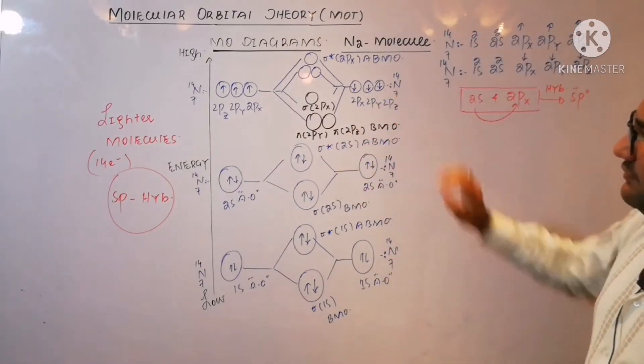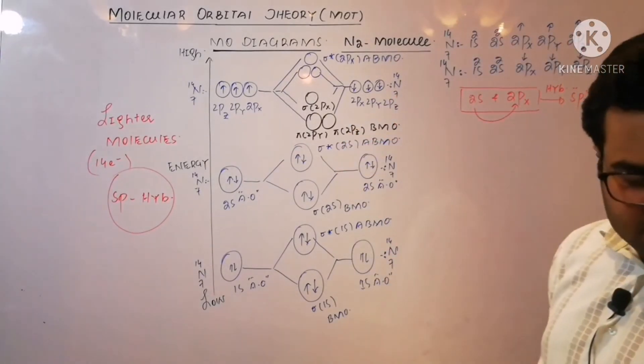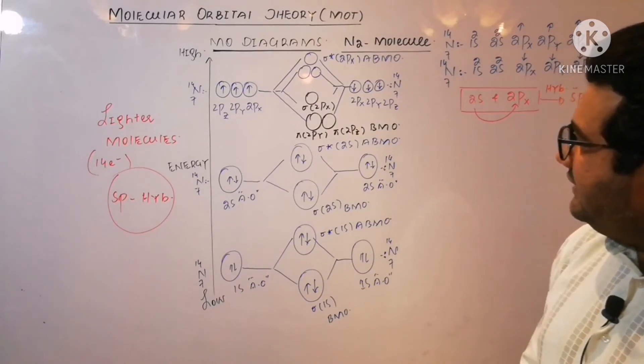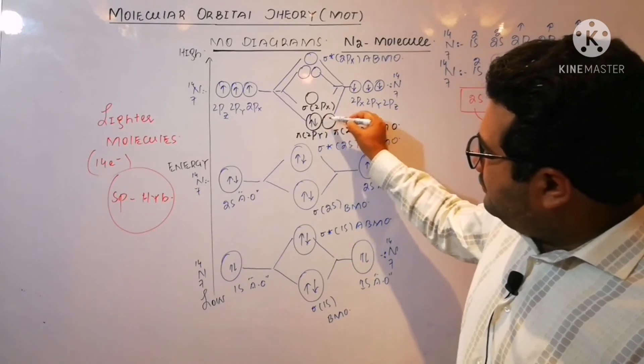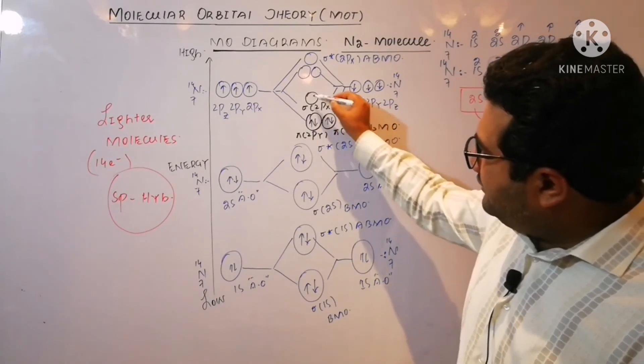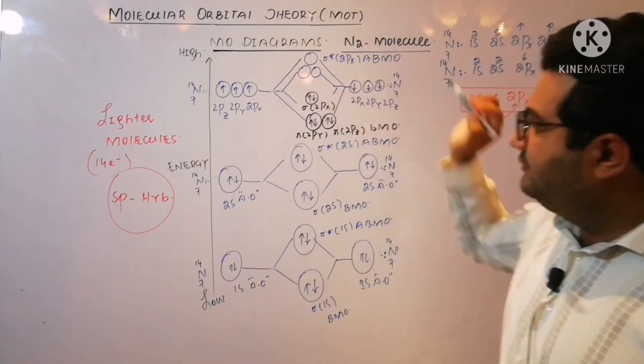So it is just because of sp hybridization. Let's move towards the filling of electrons. There are total 6 electrons, so 2, 2, 4 and 2, 6. These are the 6 electrons that are filled.